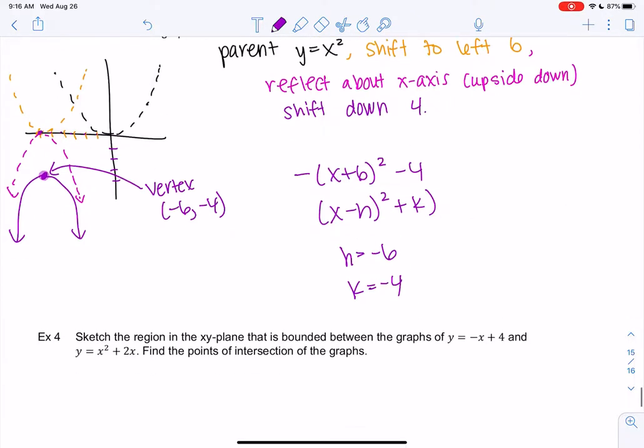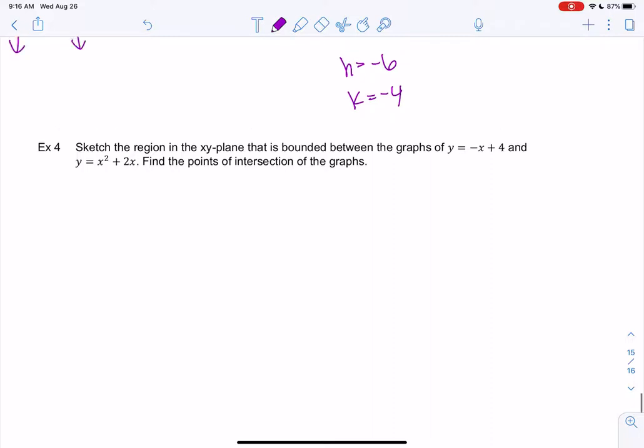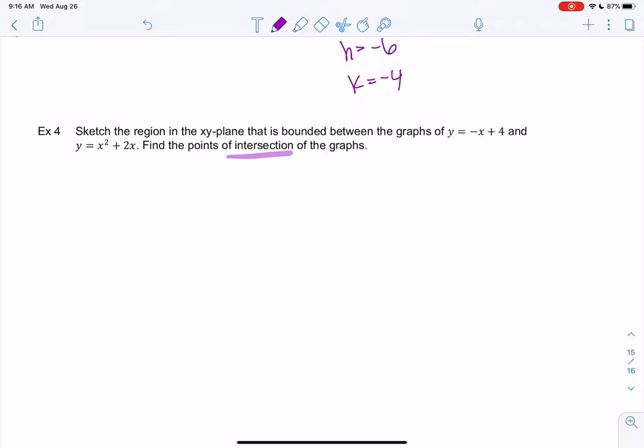Cool. So now in our last example, let's combine quadratics and linear. We'll find areas in between functions in the future, so it's nice to graph them together and find where they intersect. So intersection means where are they equal to each other.